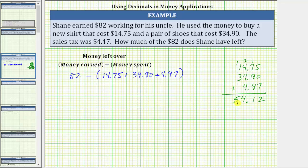We now know Shane spent $54.12, and the expression simplifies to 82 minus 54.12. The last step is to determine the difference. Because 54.12 has two decimal places, let's write 82 as 82.00, giving us the difference 82.00 minus 54.12.